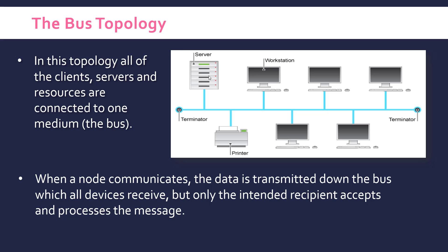When a node communicates — so let's say this workstation is communicating with this server — it doesn't go directly to the server because it has to go basically up and down this bus. So it's transmitted down the bus, which all devices receive, but only the intended recipient will actually accept and process this message.